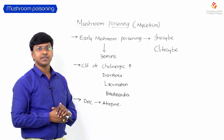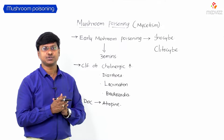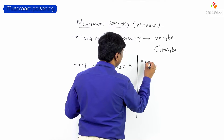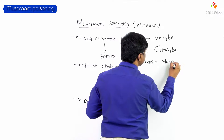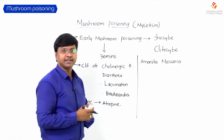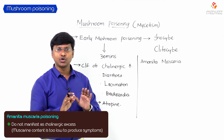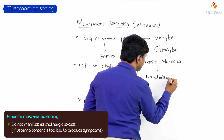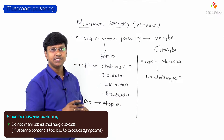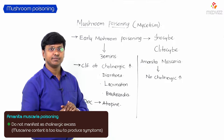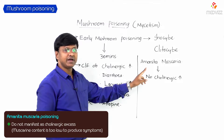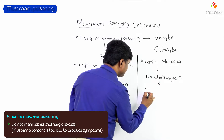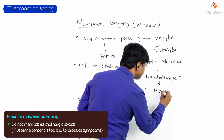Another species causing mushroom poisoning is Amanita muscaria. Importantly, Amanita muscaria poisoning does not manifest as a cholinergic crisis — there is no cholinergic excess. This is because the muscarine content in Amanita muscaria is too low.